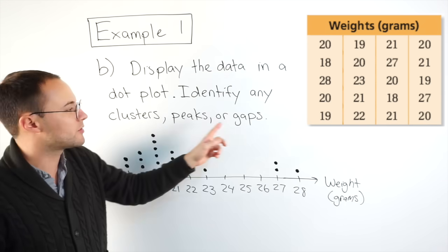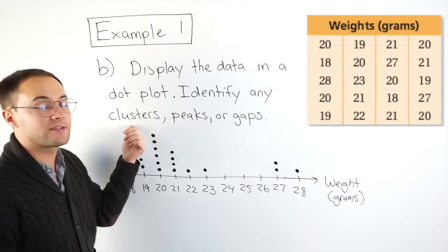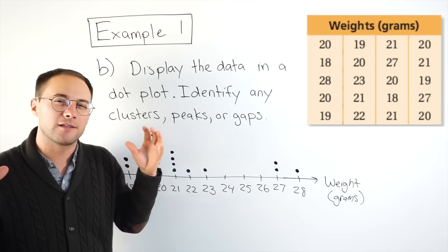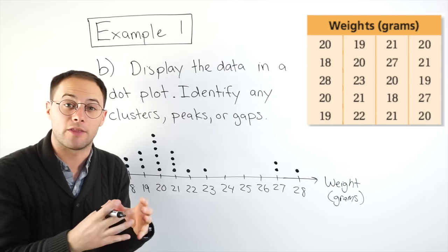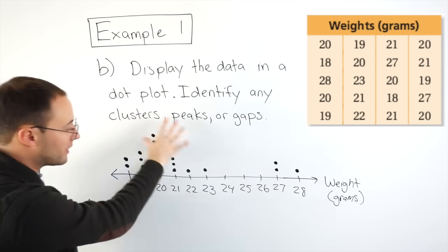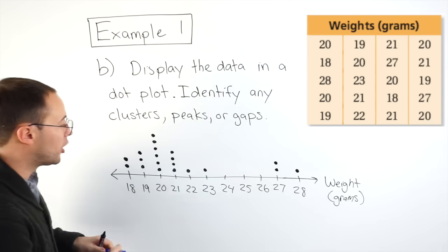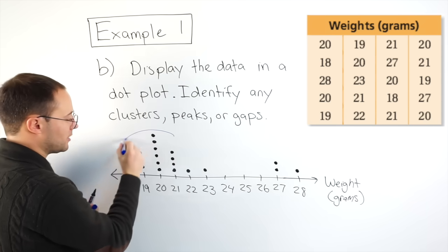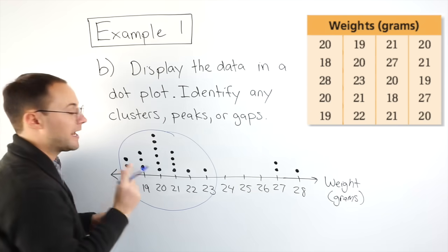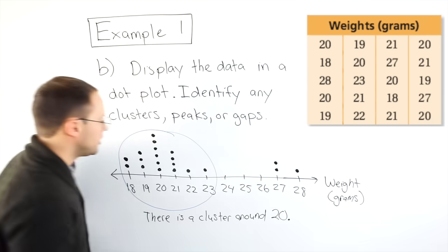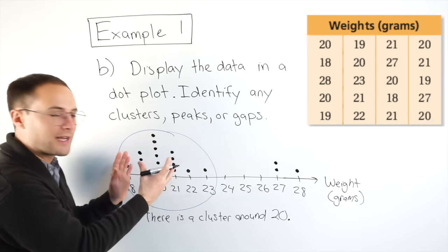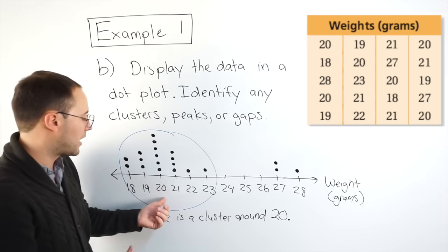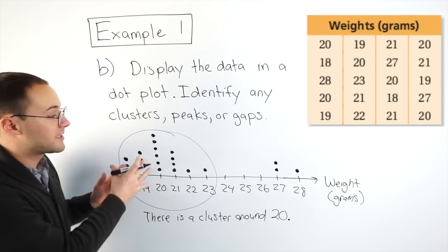Let's go to the next part. Identify any clusters, peaks, or gaps. Well, let's look at the clusters. First, a cluster is where a lot of data values are kind of bunched together. So if you look over here, you'll notice, well, it looks like there's a whole bunch of data values right there. You're just going to pick kind of what's in the middle where they all seem to be drawn to. So that would be 20. So that's a cluster.